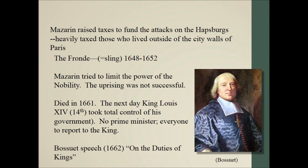Mazarin did the same thing as the Edict of 1626 which limited castles — he did not like the nobility, especially the power they were trying to take away from the king. Louis XIV took power in 1661 and really did take absolute control of the French government. He got rid of the prime minister and did things like stamp passports, so he was totally in control. Bossuet was an advisor to King Louis XIV who wrote on the duties of kings. He essentially pushed the idea of absolutism on Louis XIV, saying God put Louis XIV to rule over France, and if you go against the rule of Louis XIV, you're really going against God.